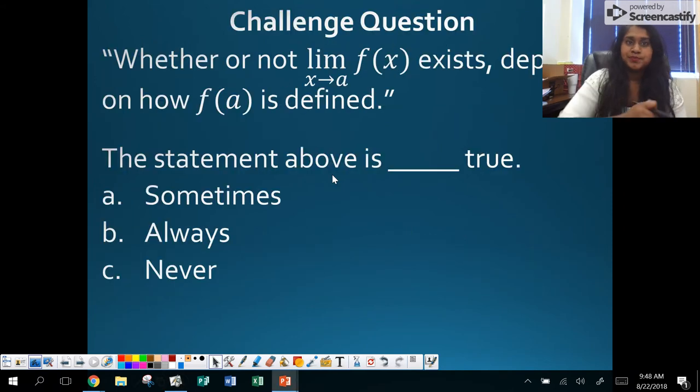So going into that, I've got a challenge question for you. Whether or not the limit as x approaches a of f(x) exists depends on how f(a) is defined. Is this statement sometimes true, always true, or never true? Take a moment, pause, think about this question, and answer it on your own.